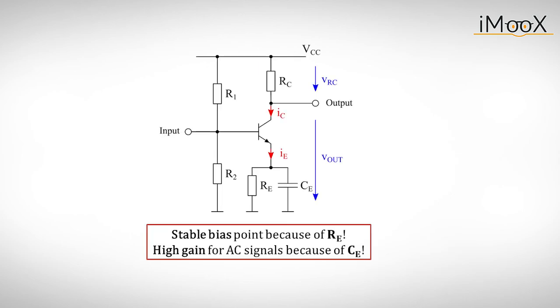If you want to get the most out of your common emitter amplifier and want the highest possible gain for your AC input signal, you can bypass the emitter resistor with a capacitor.